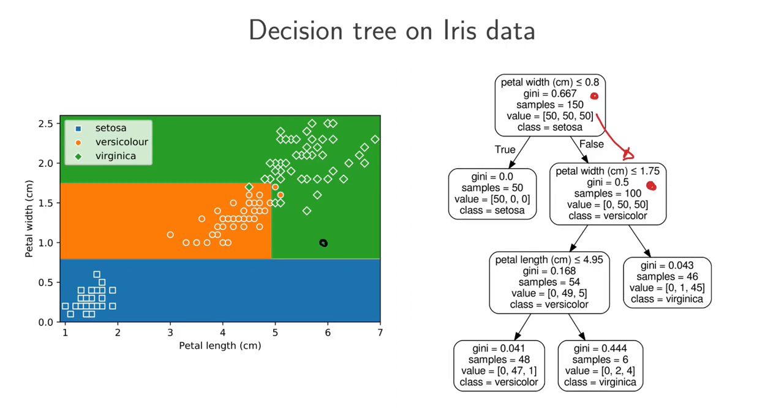And then in this node we ask, is the petal width of this flower that we're trying to classify less than or equal to 1.75? Let's just check that. So 1.75 is around here, and we can clearly see that our input here has a petal width of less than 1.75. So in this node the answer is actually yes, it's true.